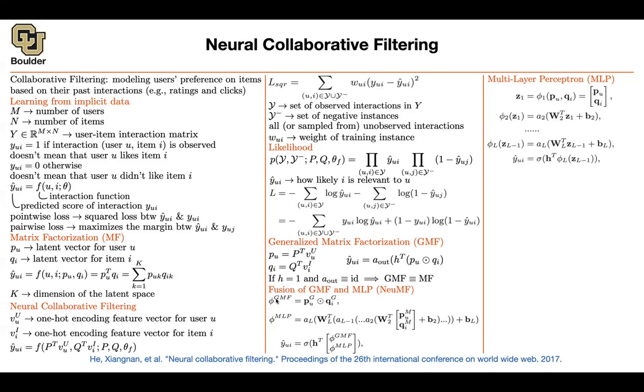That's going to give you some features from generalized matrix factorization. You are going to have some MLP features. Concatenate the two. Multiply by a vector to turn that into a scalar. Push that through your sigmoid. And that's going to give you your predictions.